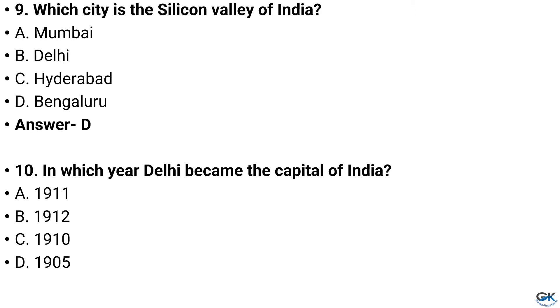Question number 10. In which year did Delhi become the capital of India? Option A: 1911, Option B: 1912, Option C: 1910, Option D: 1905. And the answer is Option A: 1911.